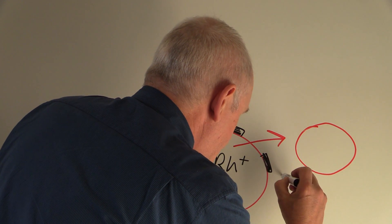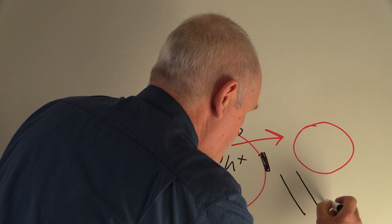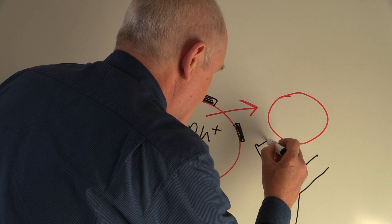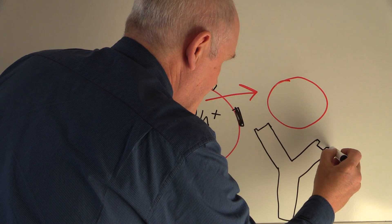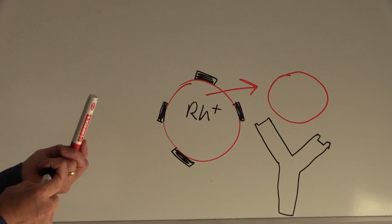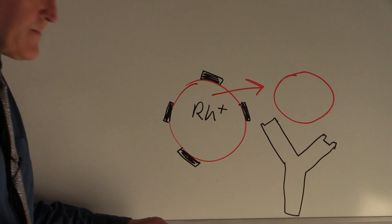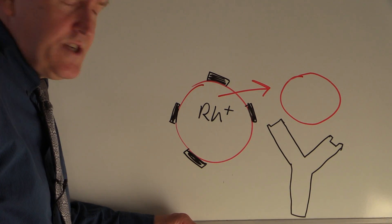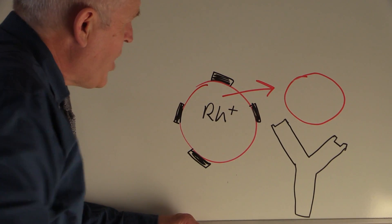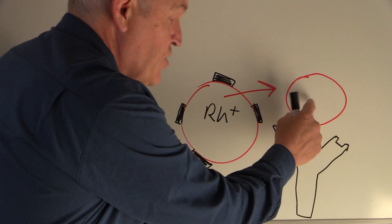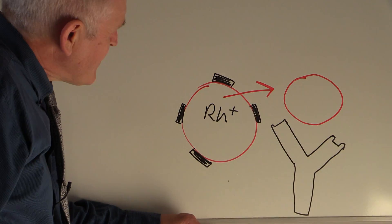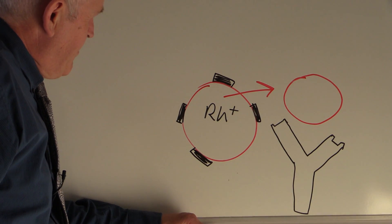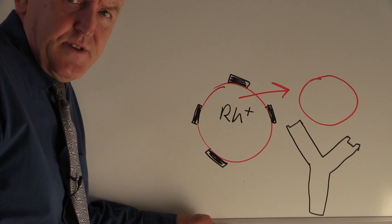These IgG antibodies are Y-shaped molecules with a specific receptor for the Rhesus factor at their ends. These Rhesus factor IgG antibodies will only be produced by a recipient who is Rhesus negative and is exposed to Rhesus positive blood. That is the essence of the physiology.